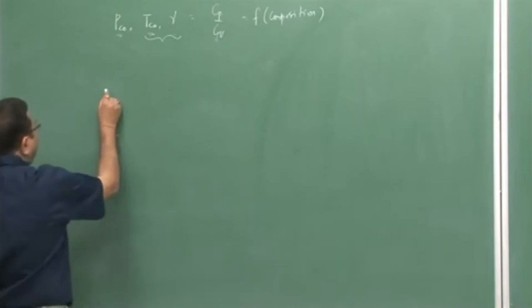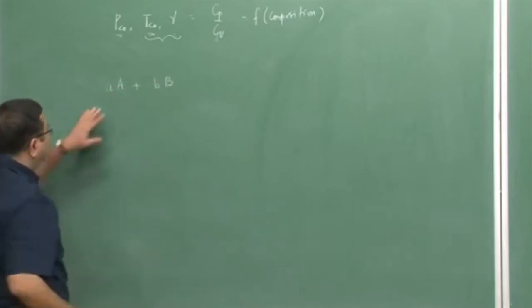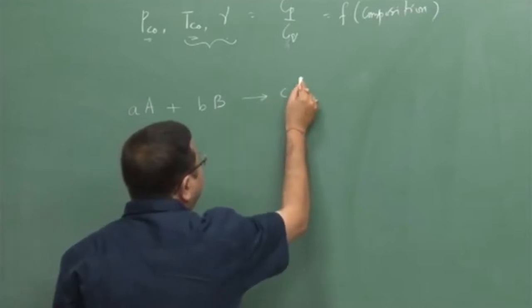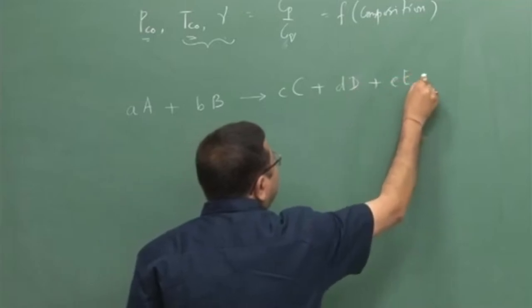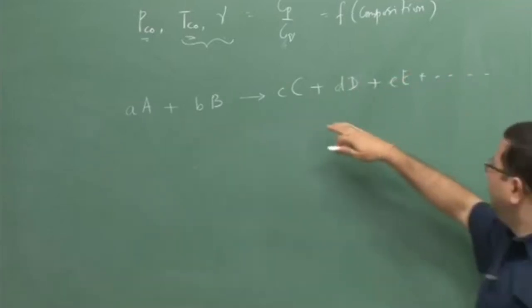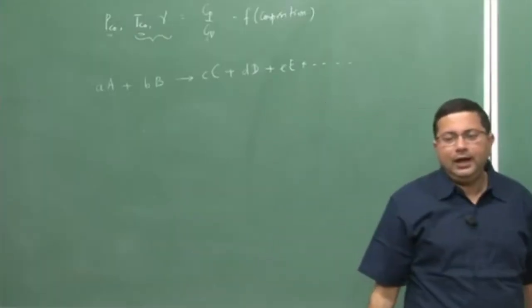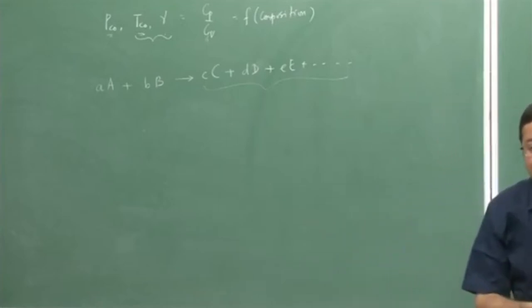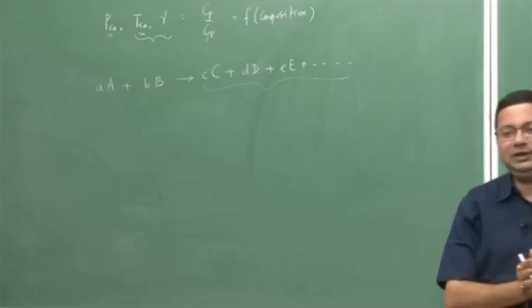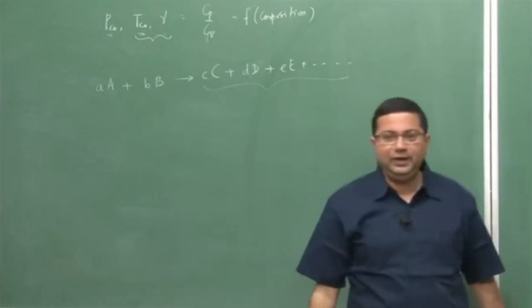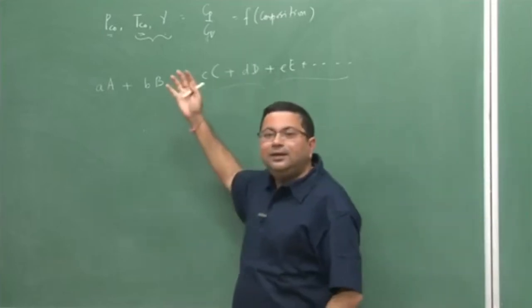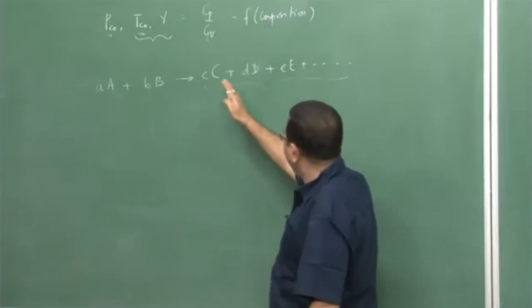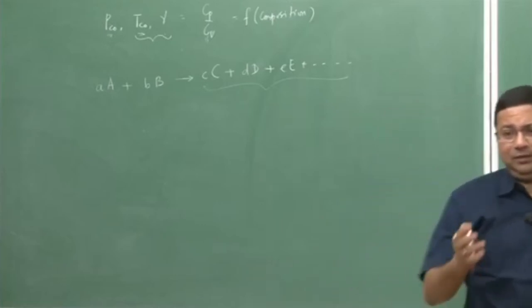Let us say we have two propellants A and B with certain amounts, small a and small b, coming into the combustion chamber. After the reaction we get various products. The composition means we need to know what the final distribution of the products is — what products are formed and how much of each product is present in the resultant mixture. Therefore, we need to analyze the chemistry of the process, and first we need to see whether there are laws governing the product distribution or if it is arbitrary.